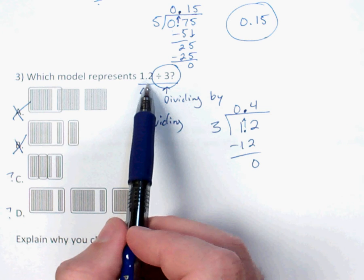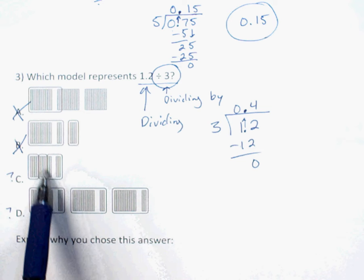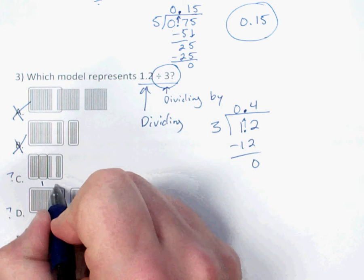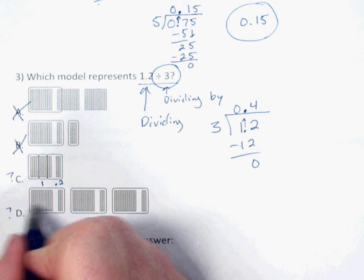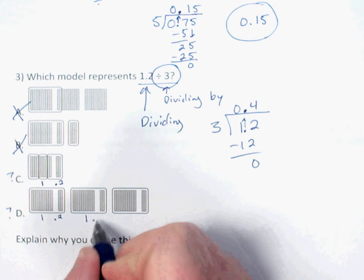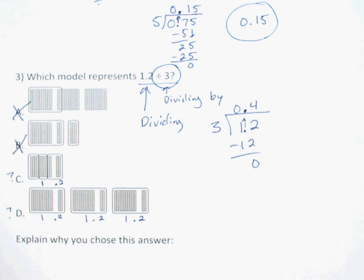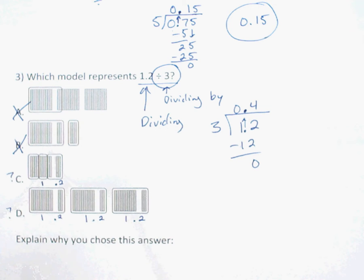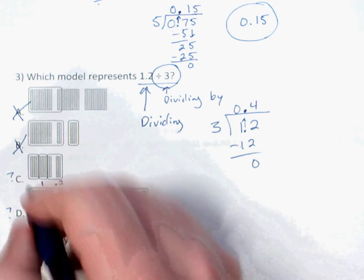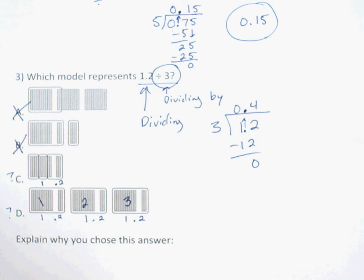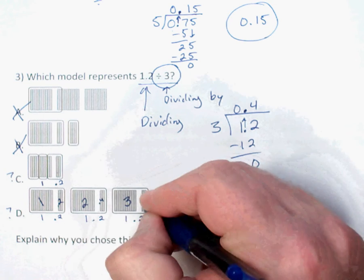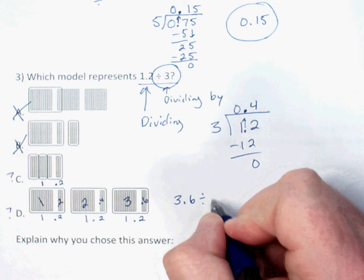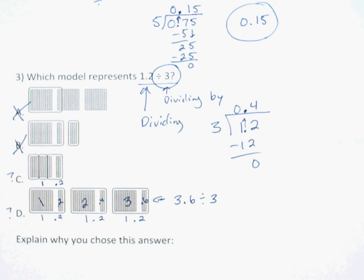Now I need to look at what I'm dividing: I'm starting with one and two tenths. In answer C, the large box is one and the small section is two tenths — so that's one and two tenths divided into three equal pieces. Answer D is the tricky confusing answer: it actually has one, two, three whole sections plus two tenths, four tenths, six tenths — so that's really three and six tenths divided by three, giving one and two tenths as the answer.